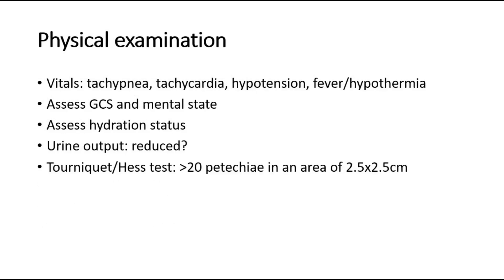On physical examination, check the vital signs where you might expect tachypnea, tachycardia, hypertension, fever, or even hypothermia if there is shock. Assess the GCS score and mental state of the patient, and remember to assess hydration status. Urine output is expected to be reduced. We can also do the tourniquet test, also known as the HES test, which is positive if there are more than 20 petechiae in an area of 2.5 by 2.5 cm — a positive result is suggestive of dengue.